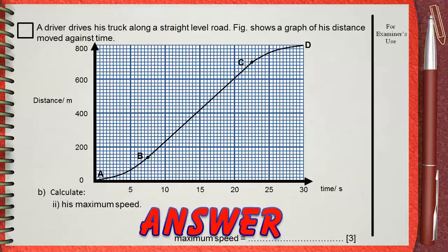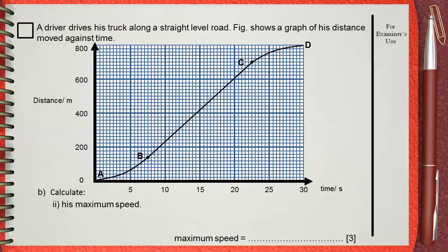In the previous question, he asked about the average speed, which was the total distance divided by the total time. Average speed means that the speed was not constant. It has changed along the journey. So where is the region where the speed was the maximum?